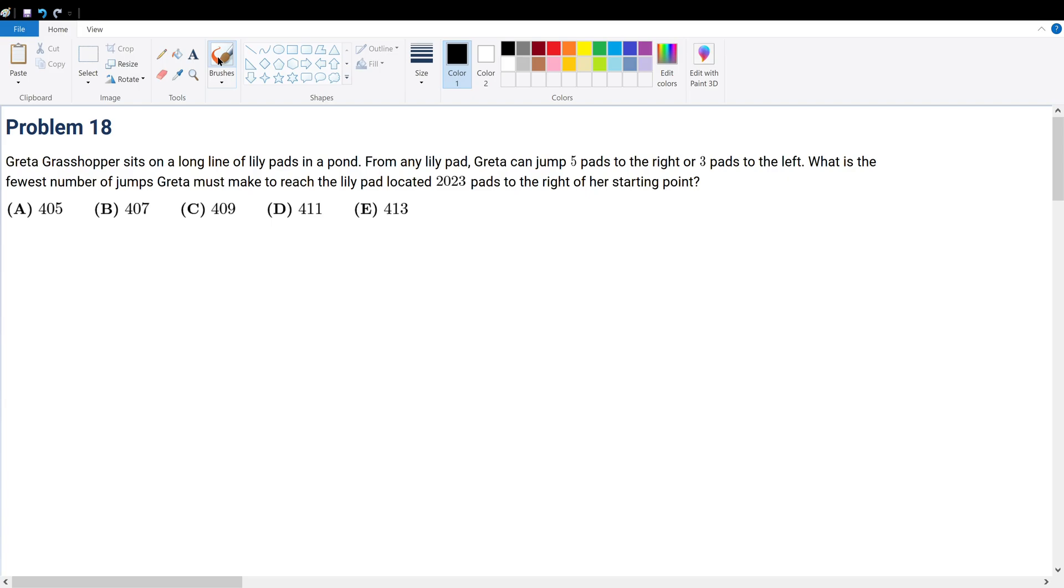Problem 18. Greta Grasshopper sits on a long line of lily pads in a pond. From any lily pad, Greta can jump 5 pads to the right or 3 pads to the left. What is the fewest number of jumps Greta must make to reach the lily pad located 2023 pads to the right of her starting point?